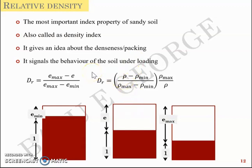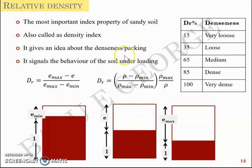Based on the value of relative density you can have very loose soil whose relative density is around 15 percent to very dense soil whose relative densities are around 85 to 100 percent. Medium, loose, dense, etc. are notations that are based on the term relative density, which is a very important index property of cohesionless soil or sandy soil.